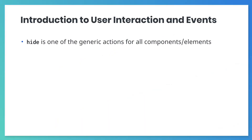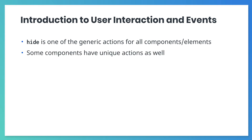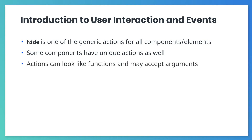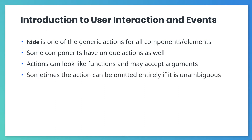Hide is one of the generic actions available for every AMP component and other HTML elements as well. Some components may have unique actions too. Actions can look like functions, and some may even accept arguments. The documentation for an AMP component will contain a list of actions that can be performed on that component. If an action is obvious, it can sometimes be simply omitted — AMP will infer your intent and run the obvious action.